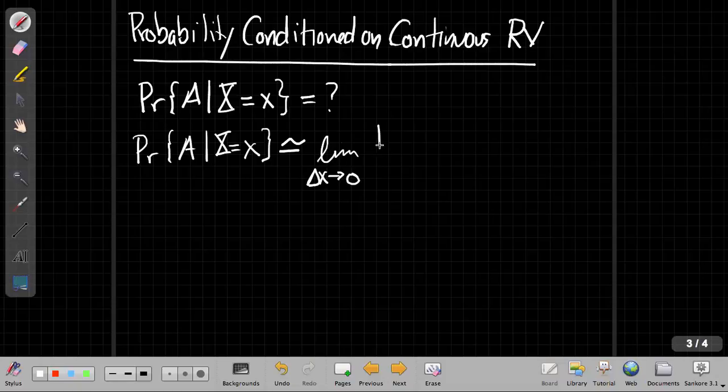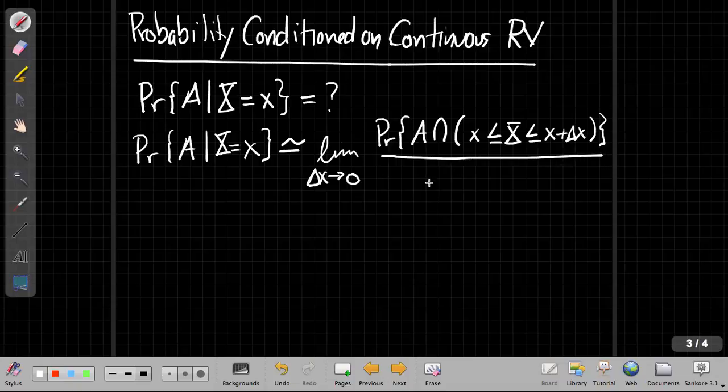We're going to say this is basically going to be equal to the limit as some delta x goes to zero of something that's a lot like the conditional probability definition. So we're going to say it's the probability of A and the event that the random variable capital X is in some little region that's delta x wide.